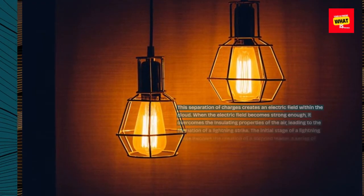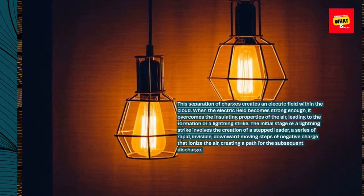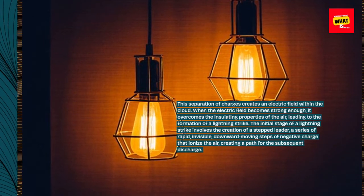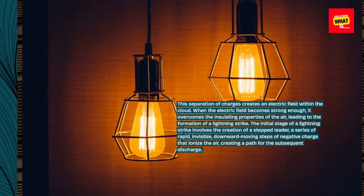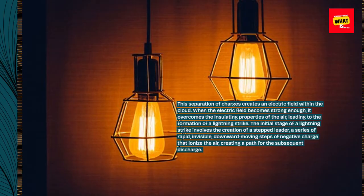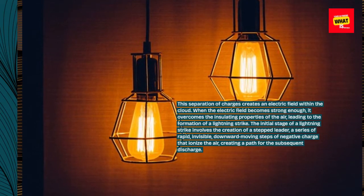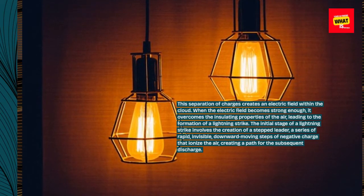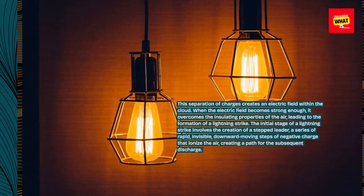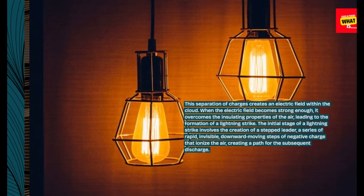When the electric field becomes strong enough, it overcomes the insulating properties of the air, leading to the formation of a lightning strike. The initial stage involves the creation of a stepped leader — a series of rapid, invisible, downward-moving steps of negative charge that ionize the air, creating a path for the subsequent discharge.